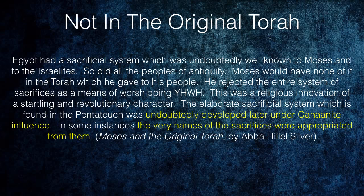One example of someone speaking about the sacrifices is in the book Moses and the Original Torah by Abba Hillel Silver, where he says that Egypt had a sacrificial system which was undoubtedly well known to Moses and the Israelites — as did all the peoples of antiquity. Moses would have none of it in the Torah he gave his people. He rejected the entire system of sacrifices as a means of worshiping Yahuah. This was a religious innovation of a startling and revolutionary character. The elaborate sacrificial system found in the Pentateuch was undoubtedly developed later under Canaanite influence, and in some instances the very names of the sacrifices were appropriated from them.